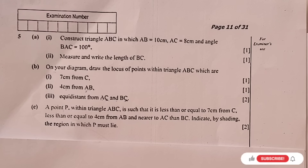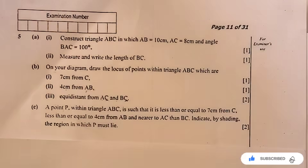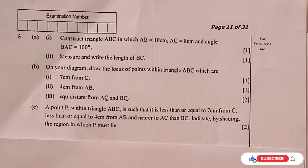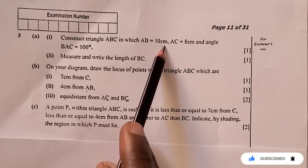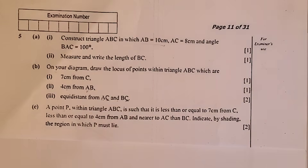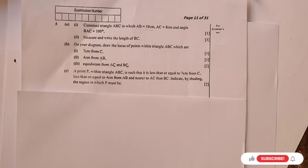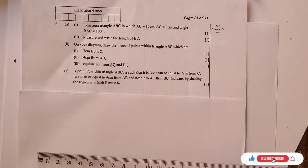Construction question 5a — this is the 2025 Mathematics Paper, GCE. The question reads: construct triangle ABC in which AB is 10 centimeters. That's the first instruction, and it forms the base, so you need a ruler to measure the base as 10 centimeters.